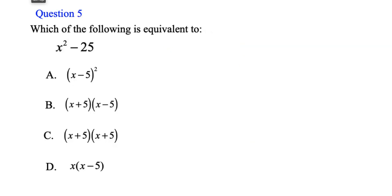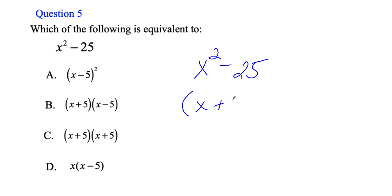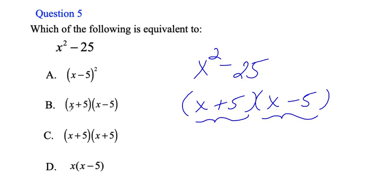One more to go. It says which of the following is equivalent to x squared minus 25. If you know how to factor from algebra, you'd know that x squared minus 25 is the difference of two perfect squares, and you can rewrite it as x plus 5 times x minus 5. If you know how to factor you can tell right away the answer is B.